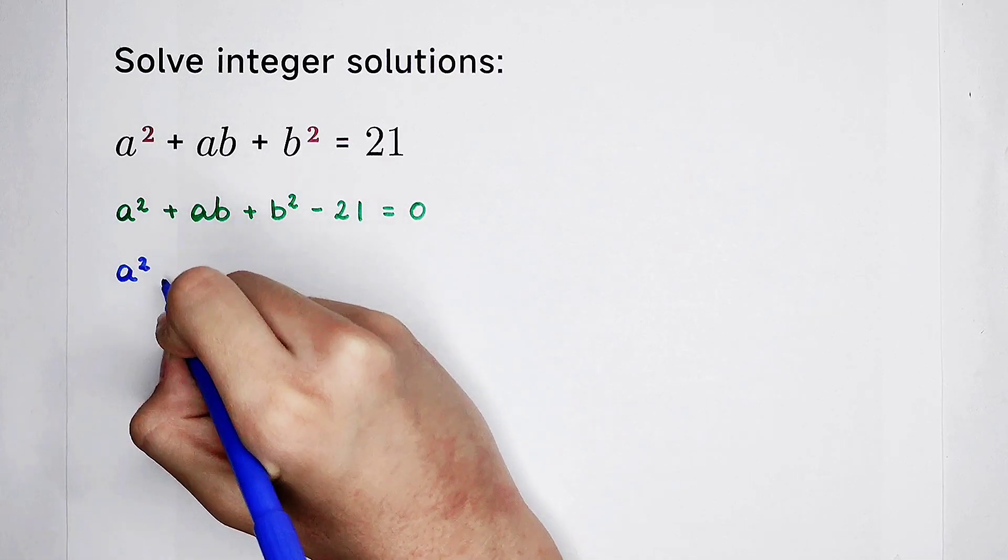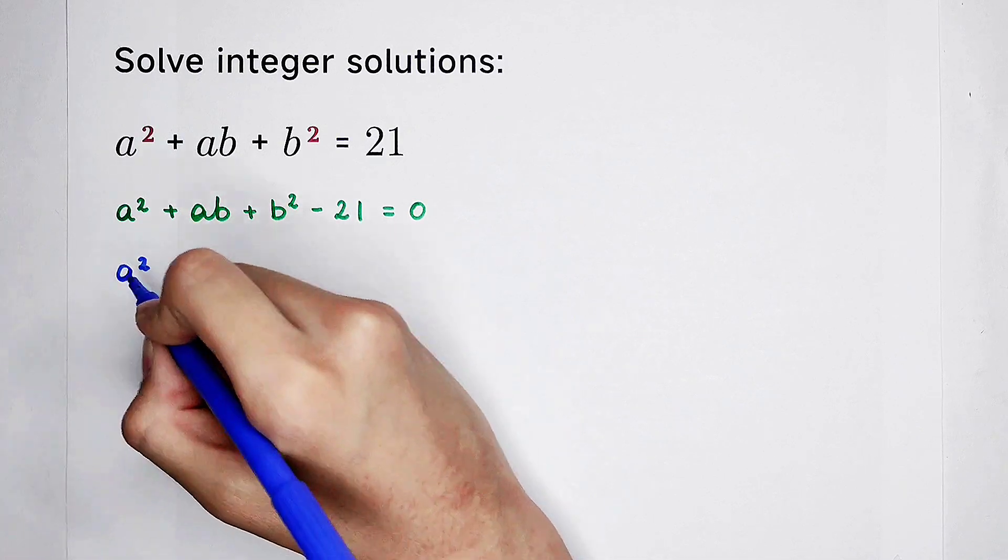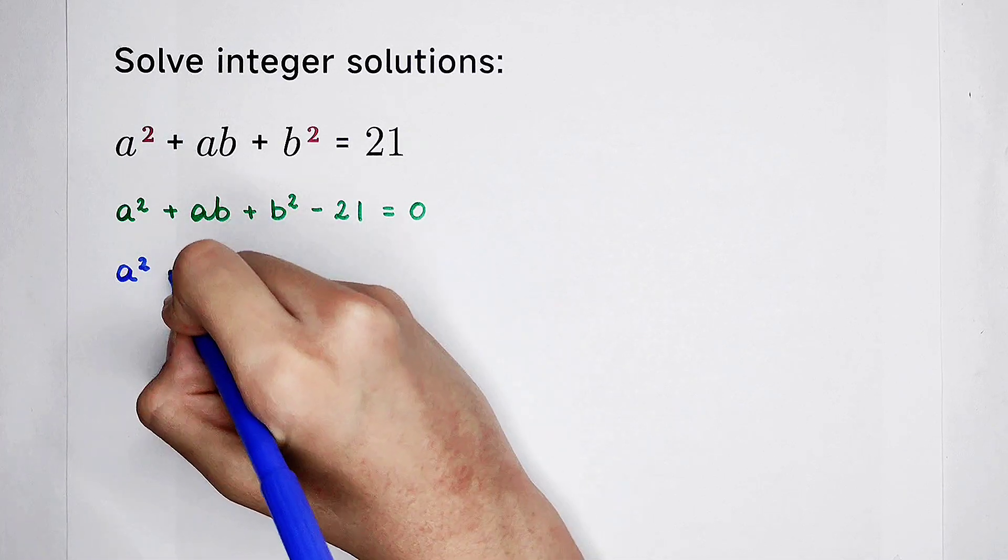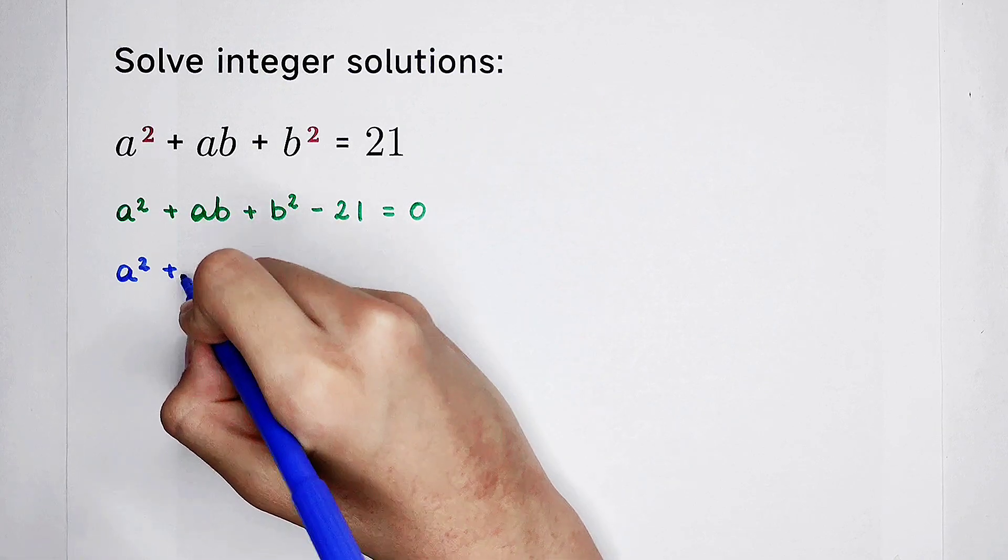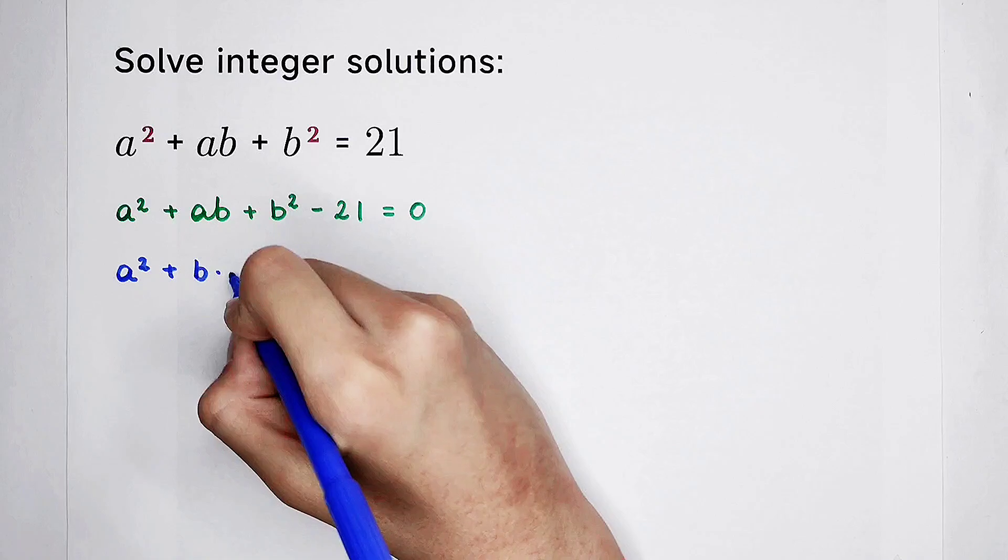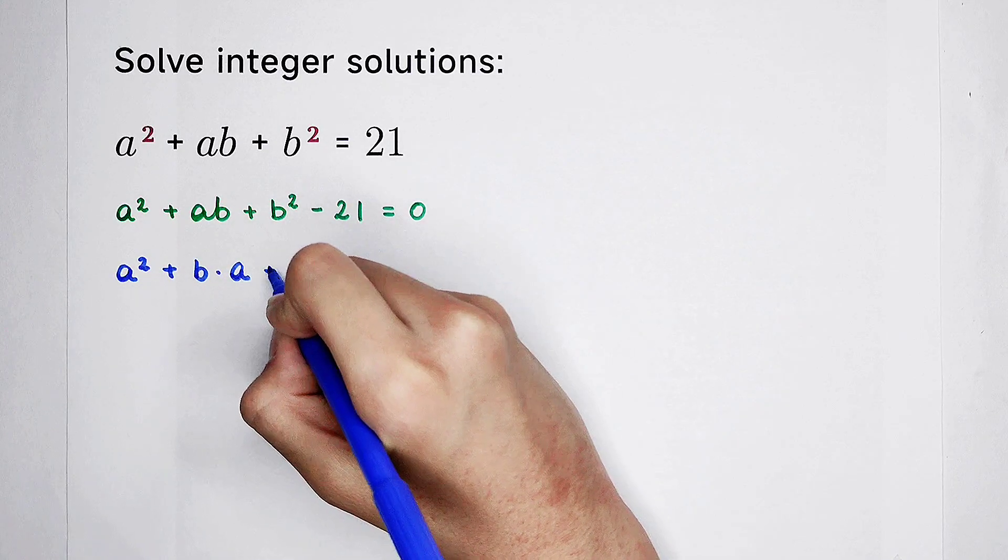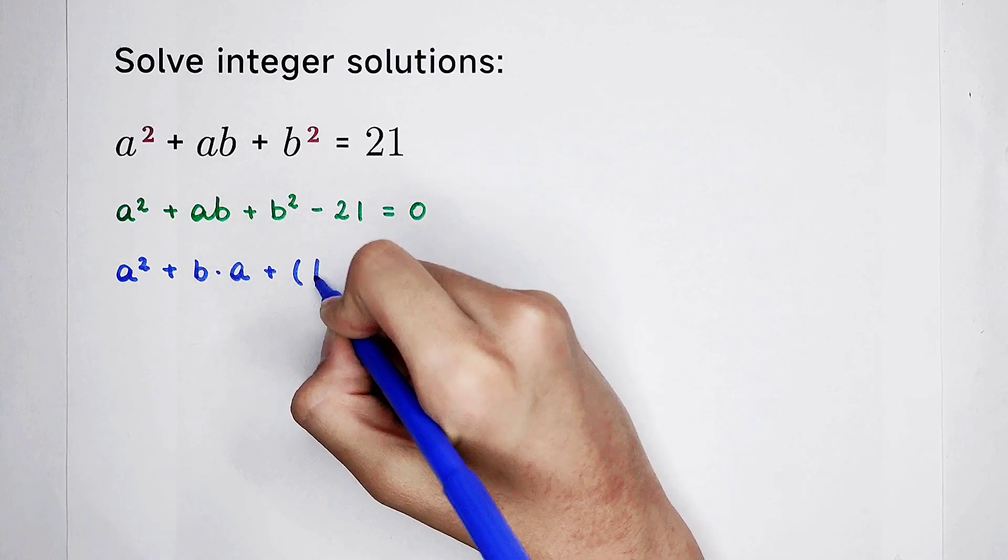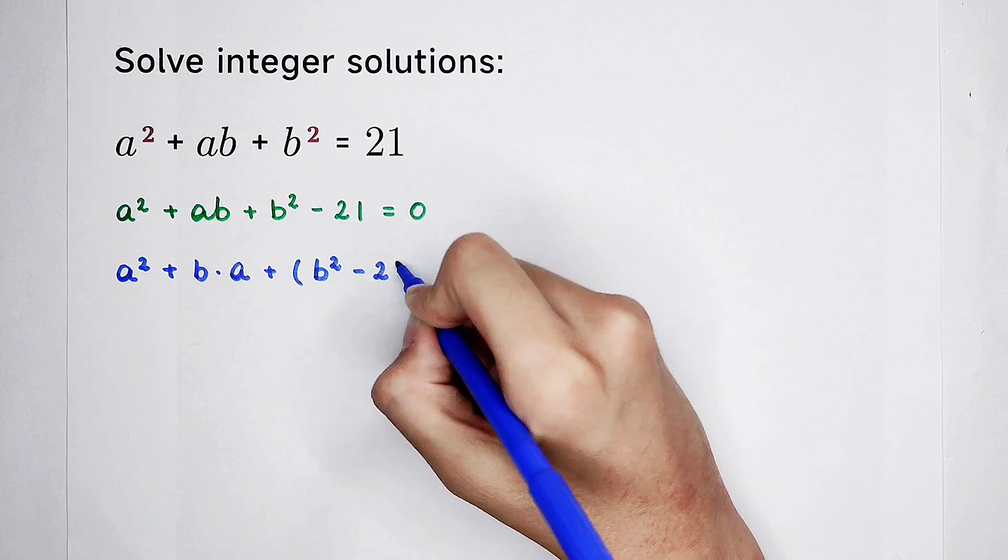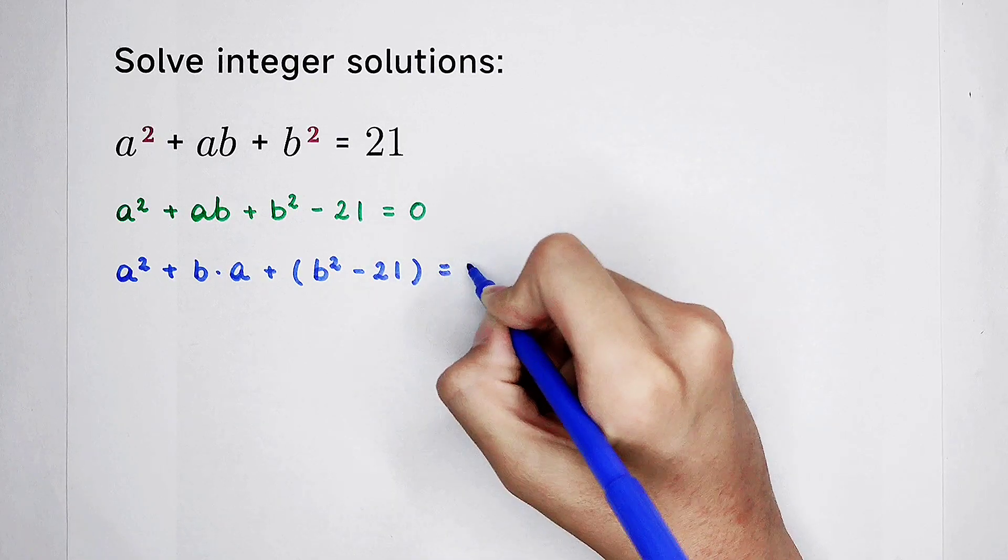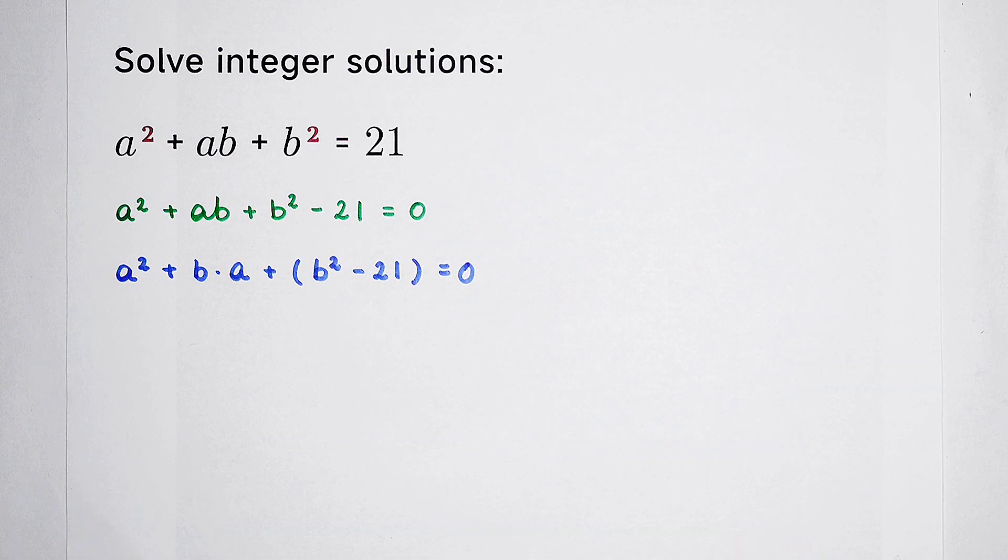Now, it turns into an equation about a. So, a squared plus the coefficient of a is b. That's b times a. And here, plus, I'm going to add a bracket. b squared minus 21 is 0. And now, we should use the quadratic formula.